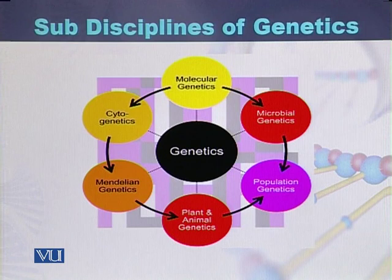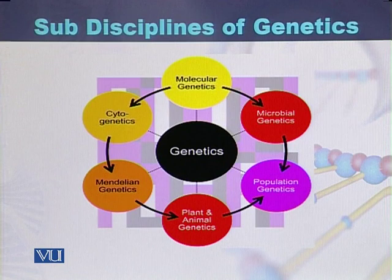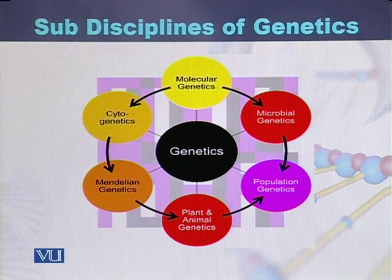one studies all those laws that were developed by Gregor Mendel — the laws of heredity — which come under the heading of Mendelian genetics. Plant and animal genetics refers to the study of genetics of plants or animals, and this sub-category is called plant and animal genetics.